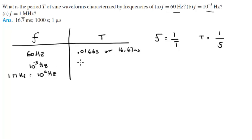For the second one, 10 to the negative 3 gives you 1000 seconds or 10 to the 6 milliseconds, and for the last one gives you 0.000001 seconds.